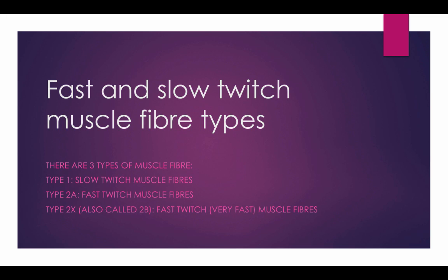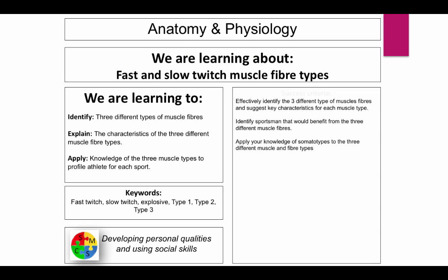Fast and Slow Twitch Muscle Fibres. There are three types of muscle fibers: Type 1 Slow Twitch Muscle Fibres, Type 2A Fast Twitch Muscle Fibres, and Type 2X, also known as 2B, which are fast twitch or very fast muscle fibers in their purest form. By the end of this video you should be able to identify the three different types of muscle fibers, explain their characteristics, and apply your knowledge to profile athletes for each sport.